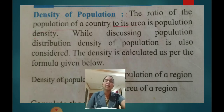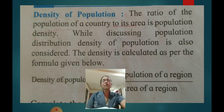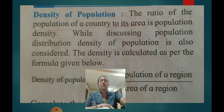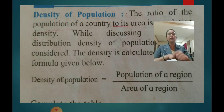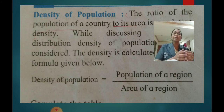The density of population is calculated using a formula. The density of population is the ratio of population of a country to its area. You measure the area and the number of people living in that area. The formula is: density of population = population of a region divided by area of the region. This tells you how dense the population is — whether it is crowded or not.